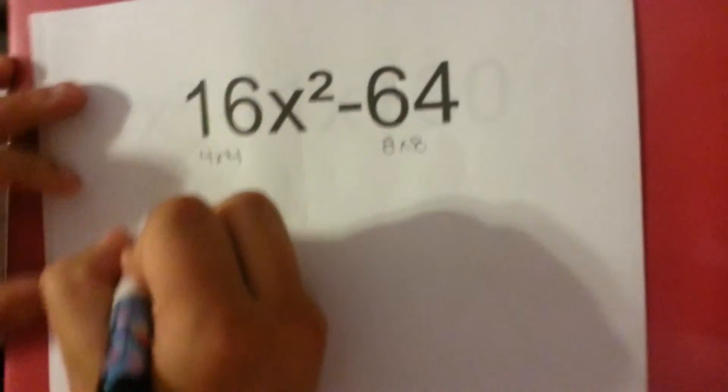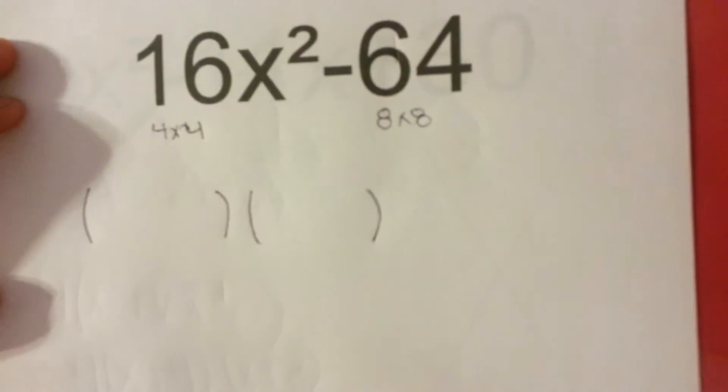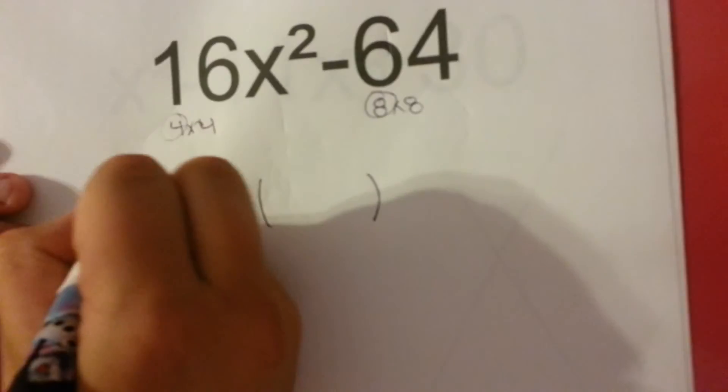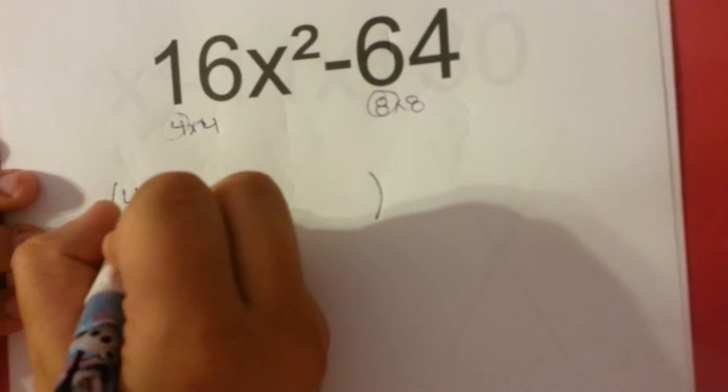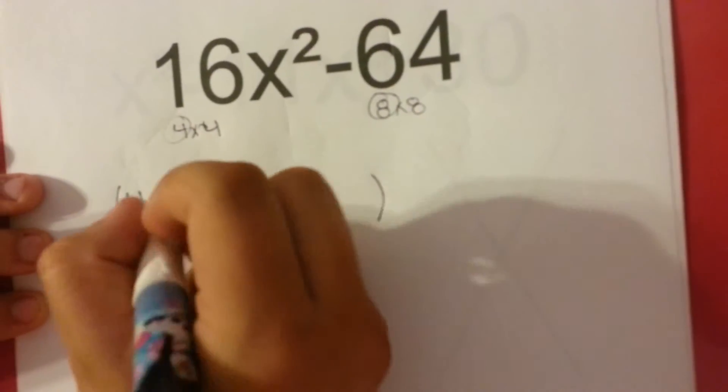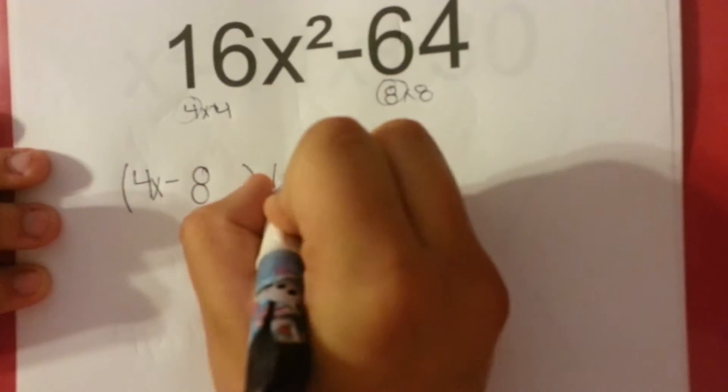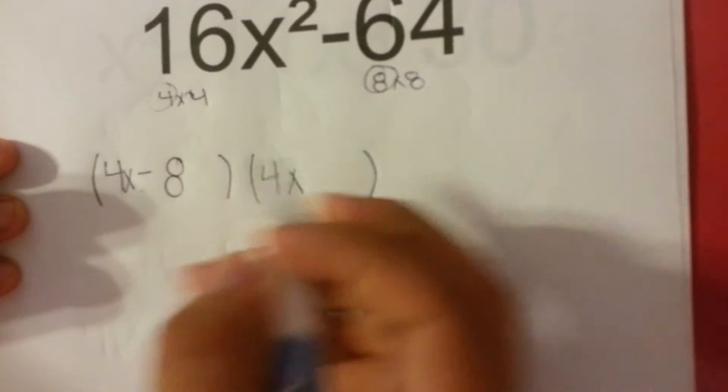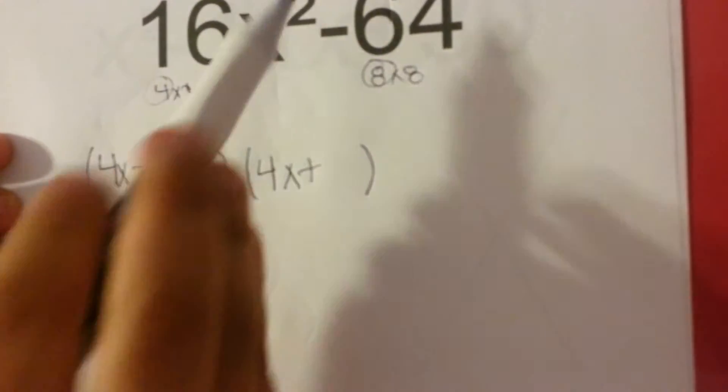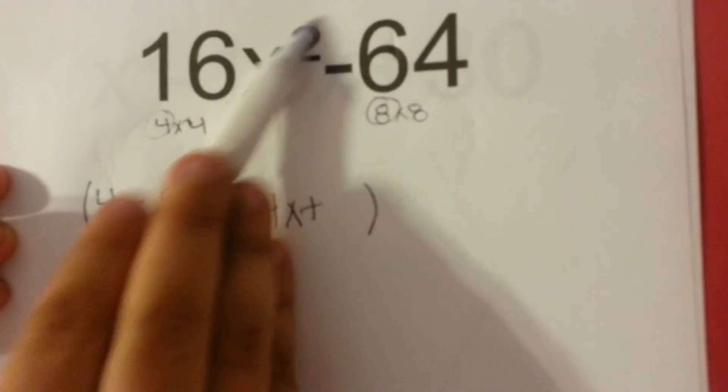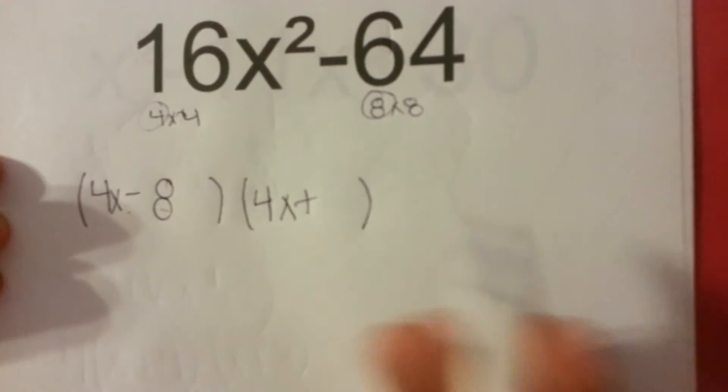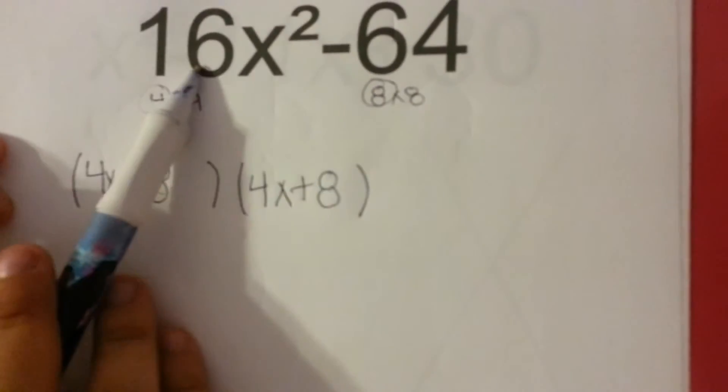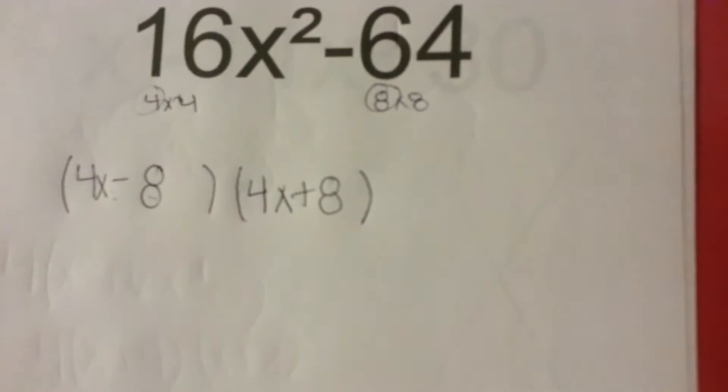So when you set up your binomials, you just take one of these and one of these and put it in there. And then take the same thing, but you do the opposite sign because there isn't an x or b value in the middle. So if you do minus 8 and plus 8, those cancel out. And if you do the FOIL method, you get 16x squared minus 64.